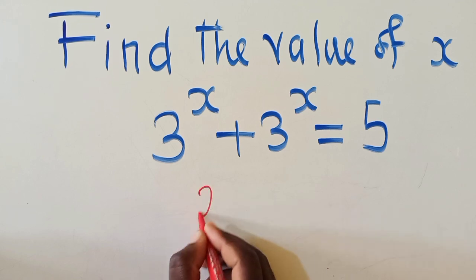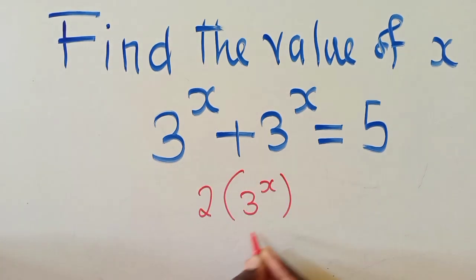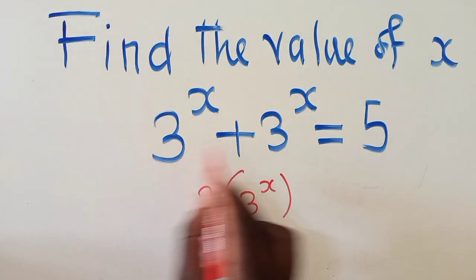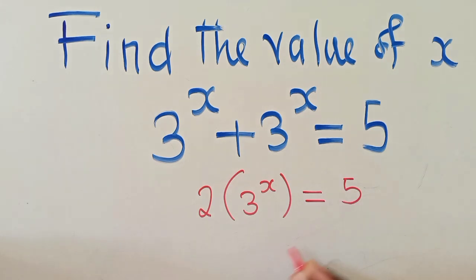So when we say 3 power x plus 3 power x, we're getting a 2 multiplied by 3 power x. So meaning there are 2 of these, which will be equal to 5.